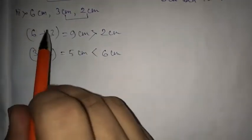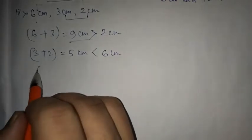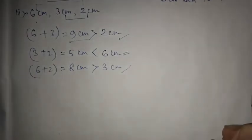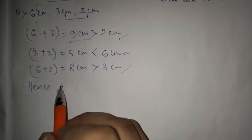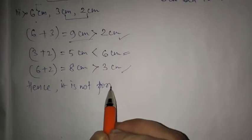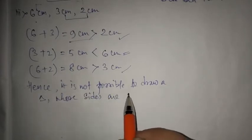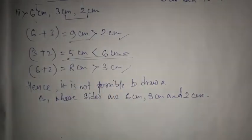In this case, the possibility to draw a triangle is not possible. For every possible combination, the sum should be greater than the remaining side. Let us check 6 plus 2: that is 8 cm, which is greater than 3 cm. But because 3 plus 2 gives only 5, which is less than 6, the triangle is not possible. That is why you must check all three side combinations. Hence, it is not possible to draw a triangle whose sides are 6 cm, 3 cm and 2 cm.